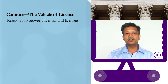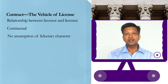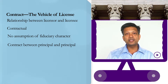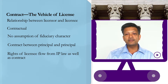What is the relationship between licensor and licensee? First, the relationship is contractual. Further, there is no assumption of a fiduciary relationship between the licensor and the licensee. It is a contract between a principal and a principal — the licensee is not necessarily an agent of the licensor. Rights of the licensee flow from intellectual property law as well as contract law.